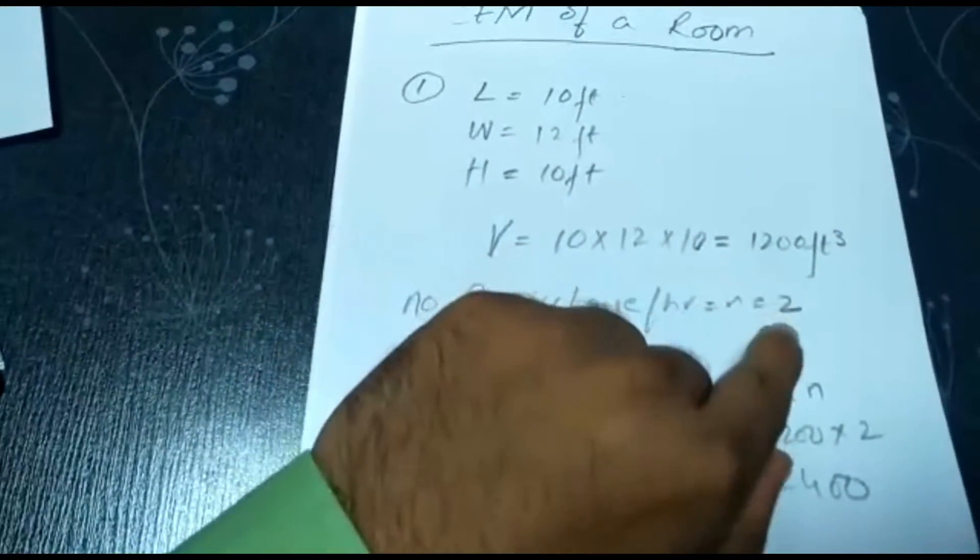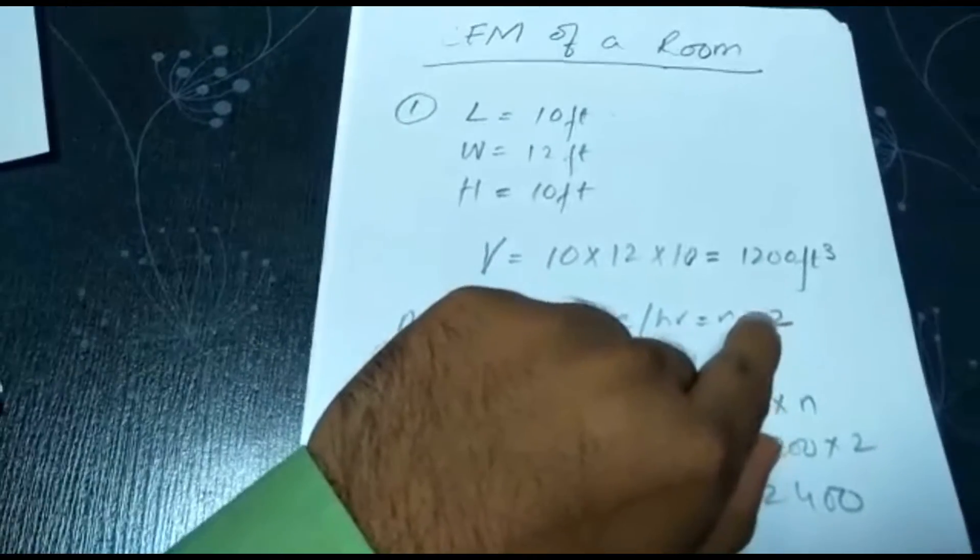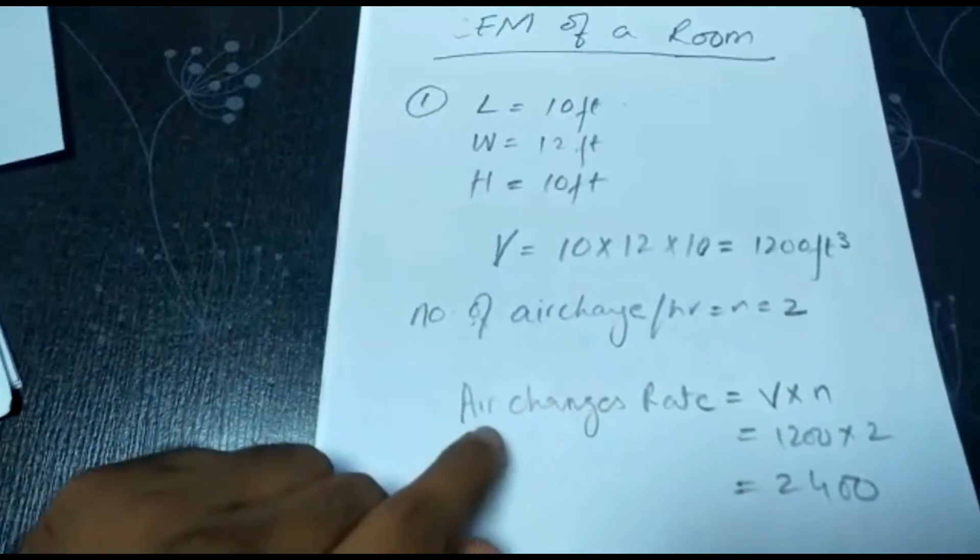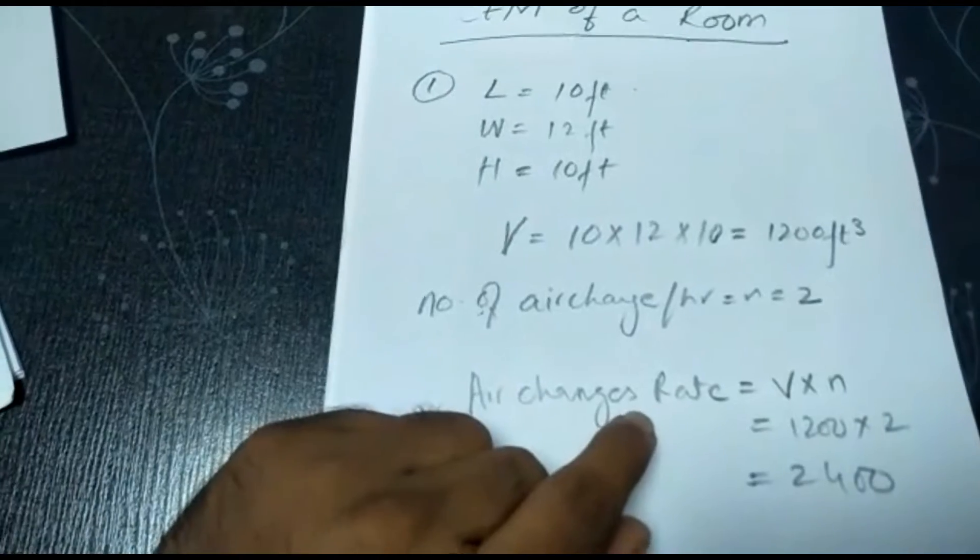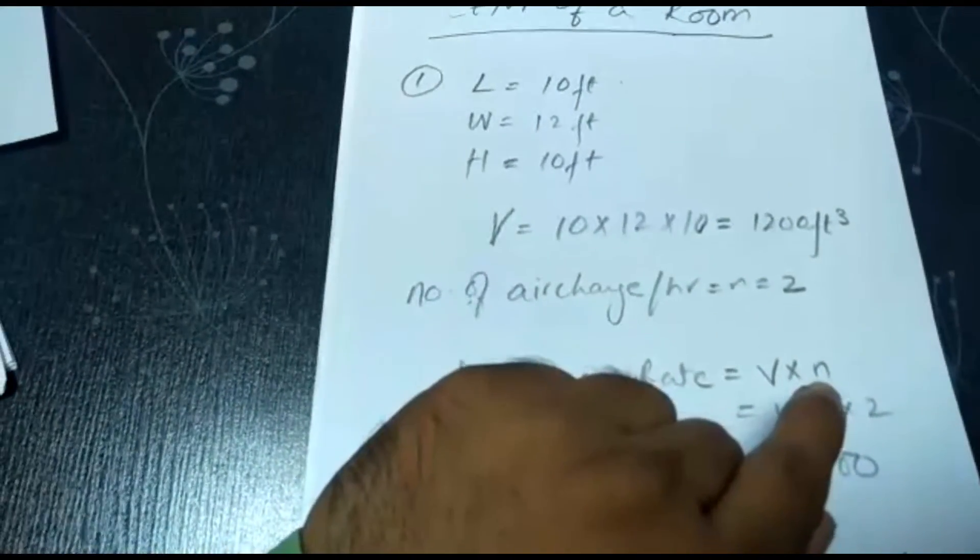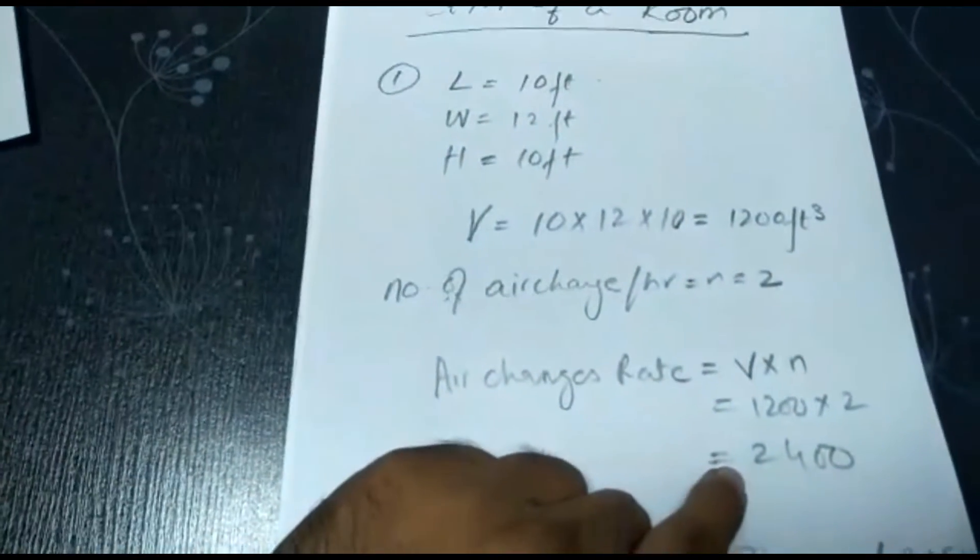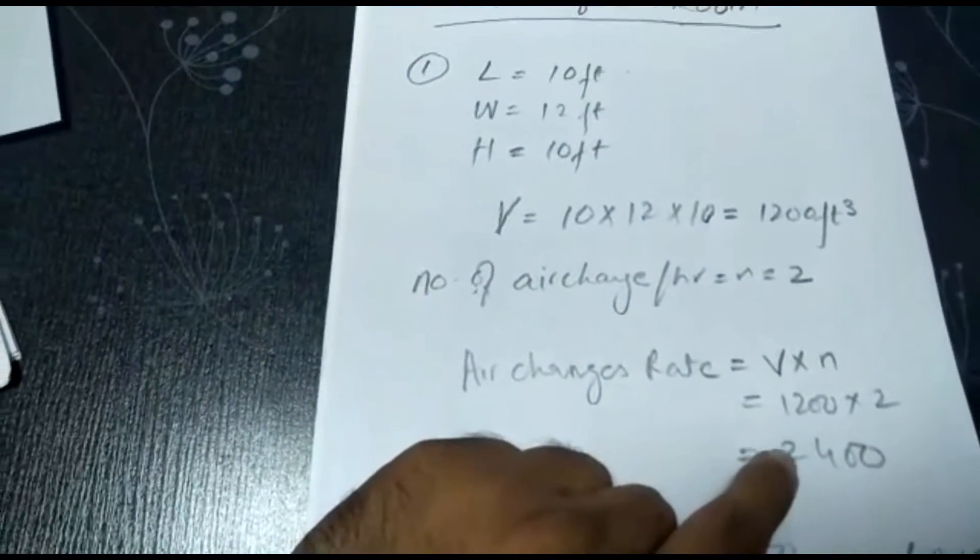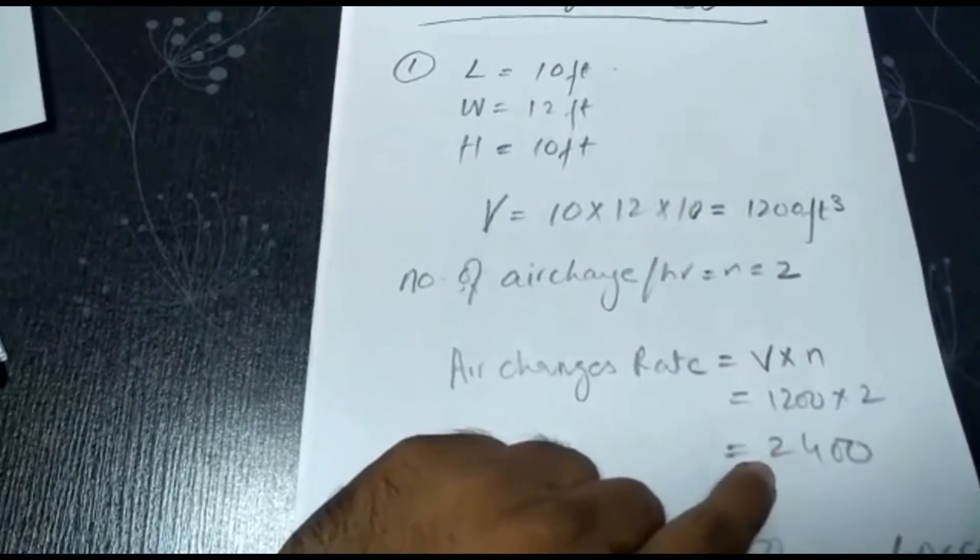So air changes rate we will calculate by multiplying volume and number of air changes per hour. So we get 2400 cubic feet per hour.